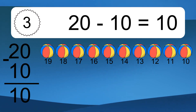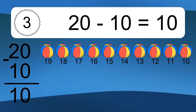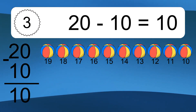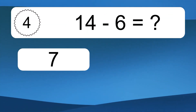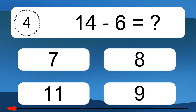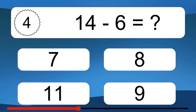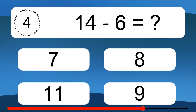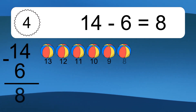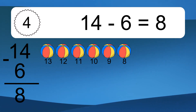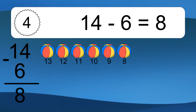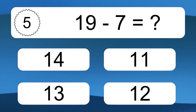20 minus 10 equals what? 10! Let's count it: 19, 18, 17, 16, 15, 14, 13, 12, 11, 10. 14 minus 6 equals what? 14 minus 6 equals 8. Let's count it: 13, 12, 11, 10, 9, 8.